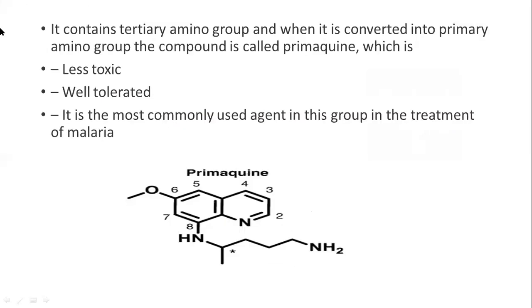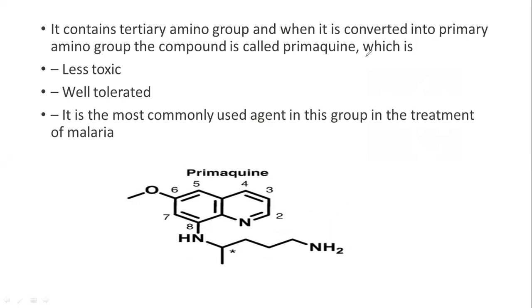We can convert a tertiary amino group into a primary amino group. This produces a less toxic and well-tolerated drug, which is the most commonly used drug in this category. The structural change is that the terminal tertiary nitrogen is converted into a primary nitrogen; the rest of the structure remains the same. This drug is Primaquine.